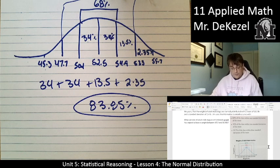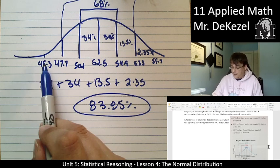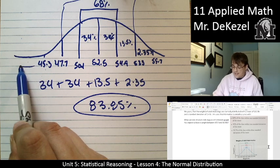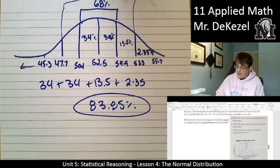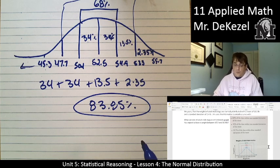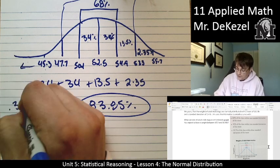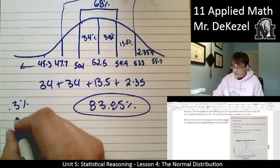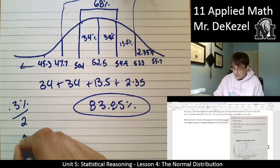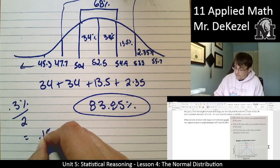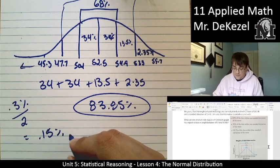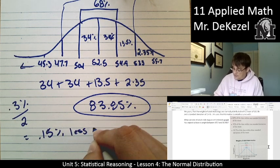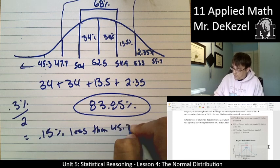What percent would you expect to have a weight less than 43.3 pounds? So that's less than this. That's less than three standard deviations. Outside, we would expect 0.3% total. So that's on this side and on this side of the curve. So we divide that by 2 to get a total of 0.15% of dogs being less than 45.3 pounds.